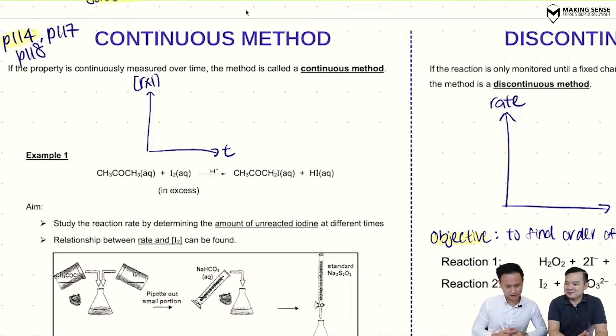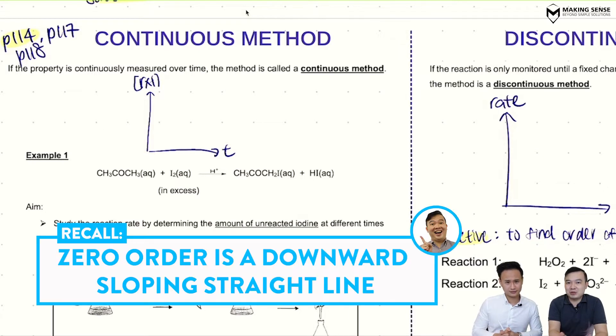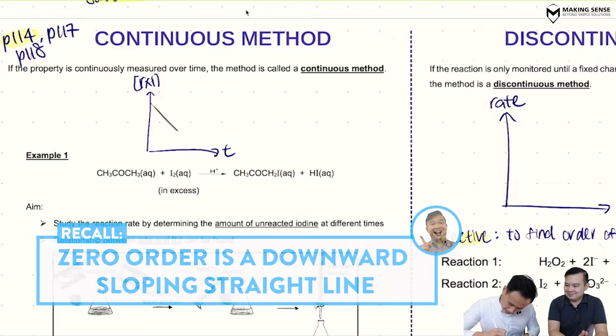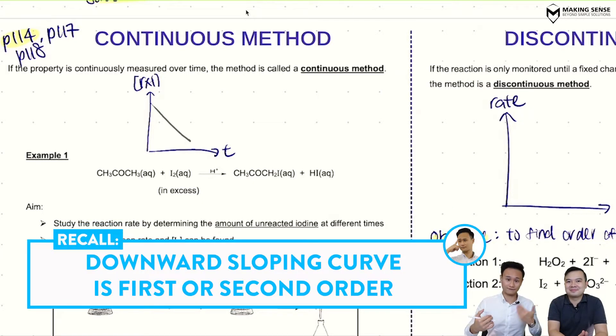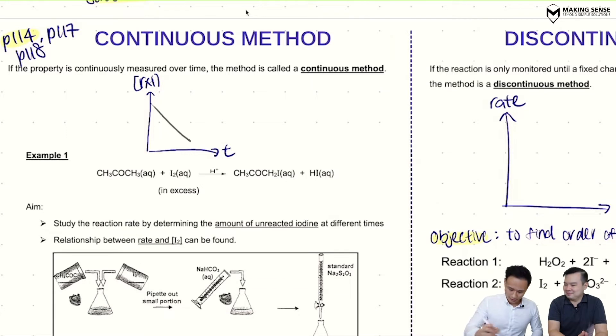if it's zero order, how does this shape look like? So reactant time graph must always be decreasing. So if it's zero order, it will be a downward sloping straight line. And likewise, you guys can remember if it's a curve, a downward sloping curve, it's either first, it's either second.